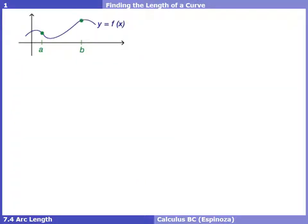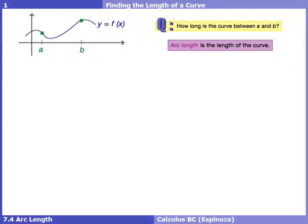So how do we find the length of a curve, which happens to be arc length — how long is the curve between A and B? Unfortunately, we don't really have a way of finding that exactly. Of course, we can find distances in the x-y plane using the distance formula, but that's only for straight paths. When it's a curved path, we really don't have a way of doing that. Arc length is just another way of saying what's the length of a curve.